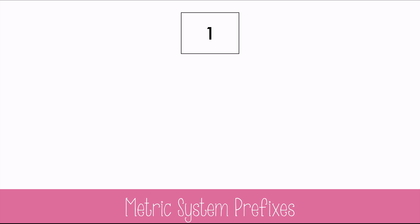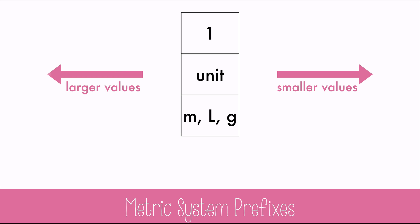In the middle are the base units with a value of 1, like 1 meter, 1 liter, or 1 gram. On the right will be smaller values, and to the left will be larger values.